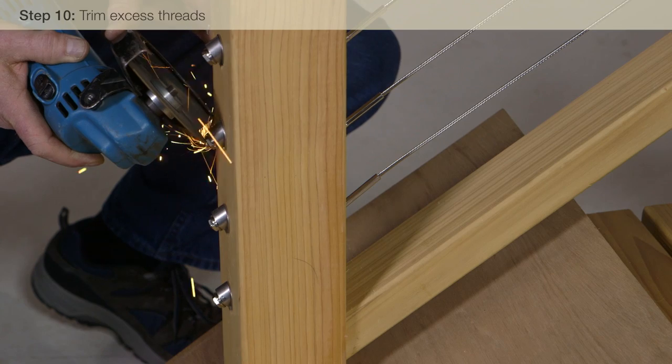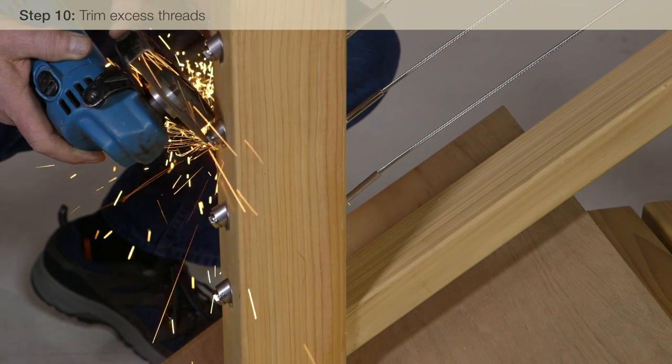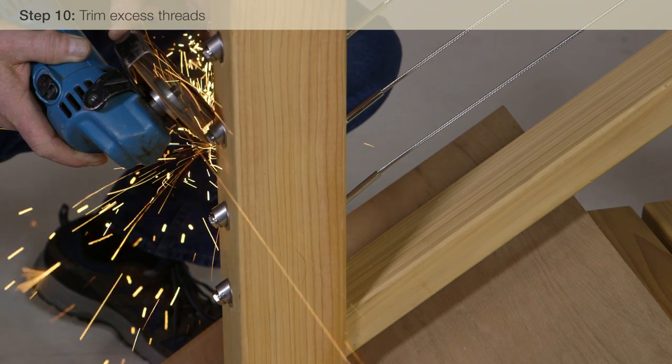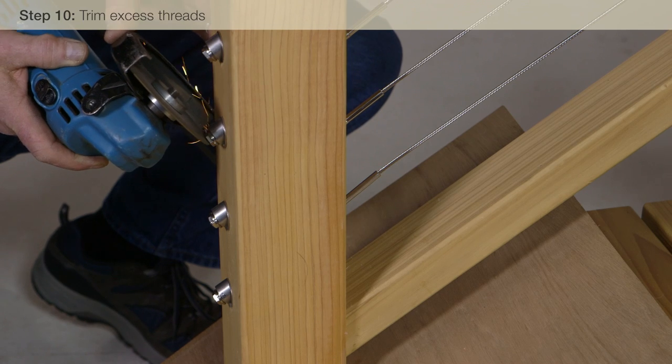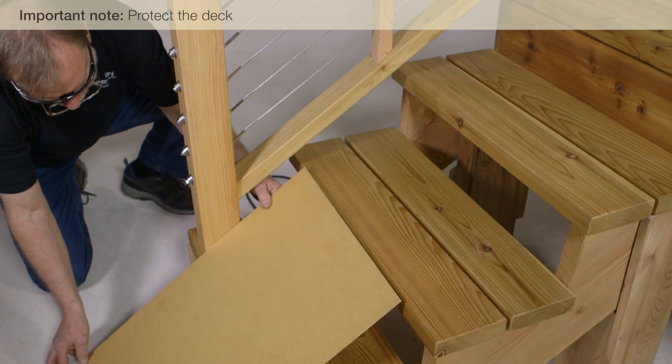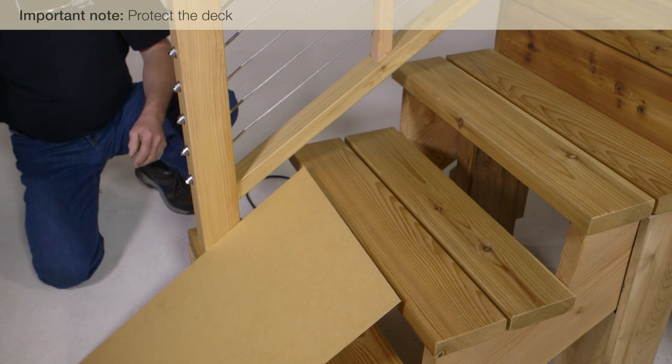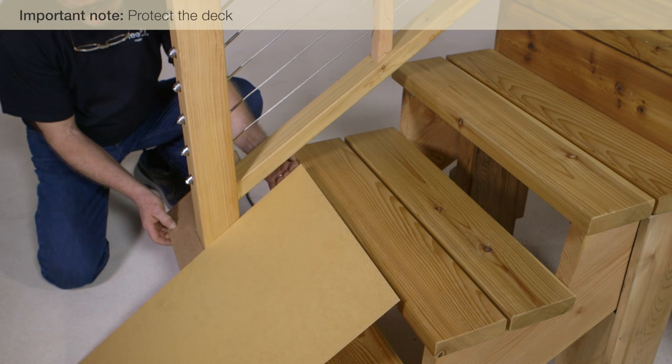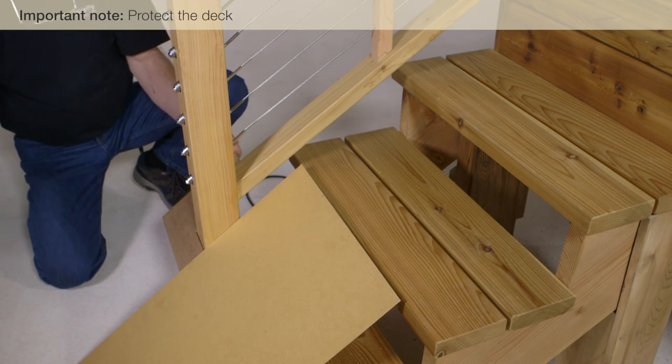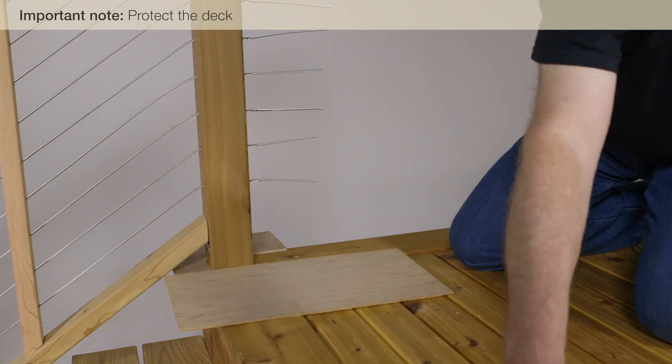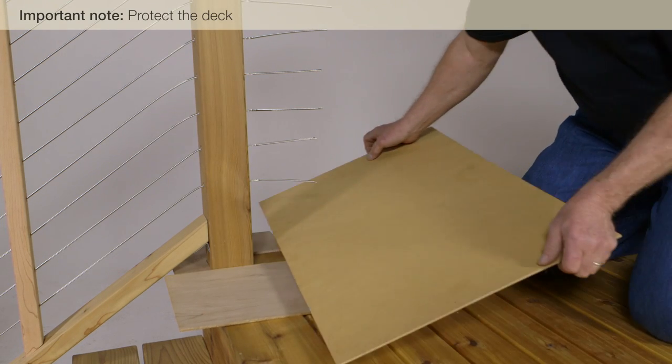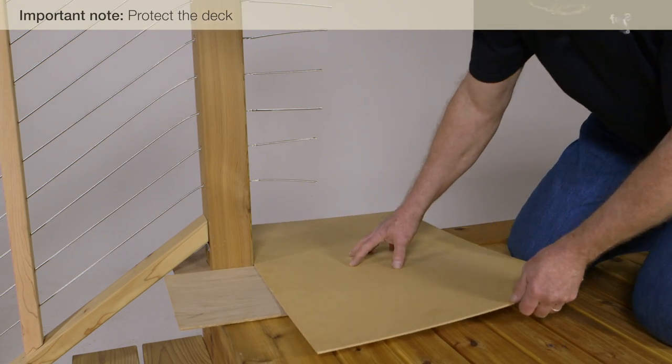Trim the excess thread as close to the snug grip washer nut as possible. We are using an electric grinder with a cut-off disc, but you may use a hacksaw or electric reciprocating saw with a metal cutting blade instead. When using an electric grinder, be sure to protect the deck and surrounding surfaces from sparks or hot metal pieces that may fall.